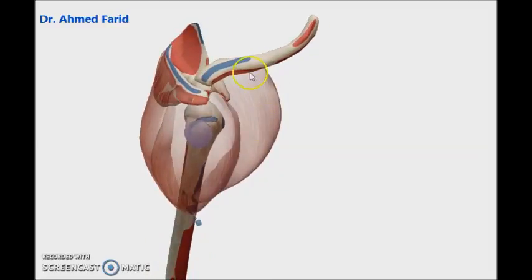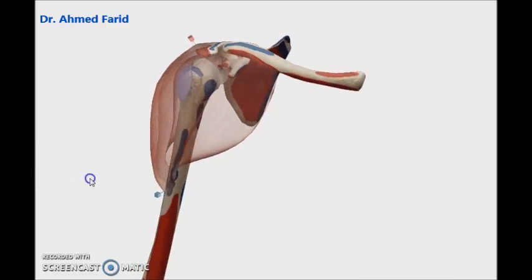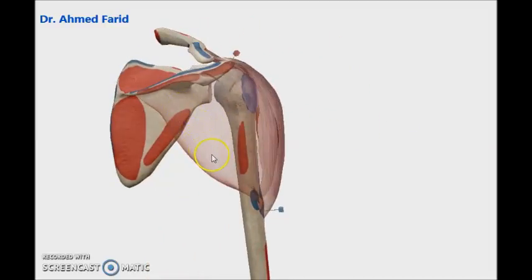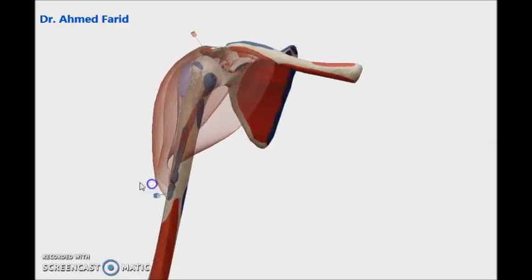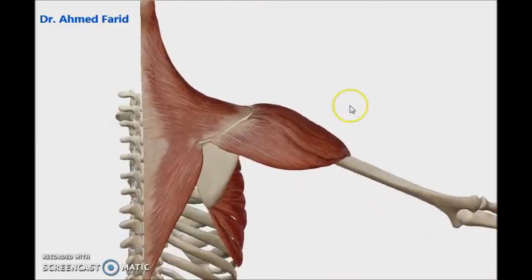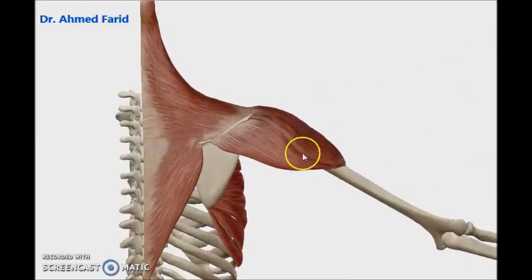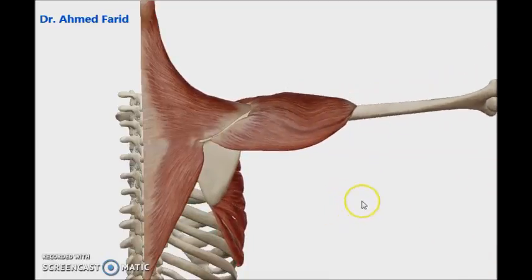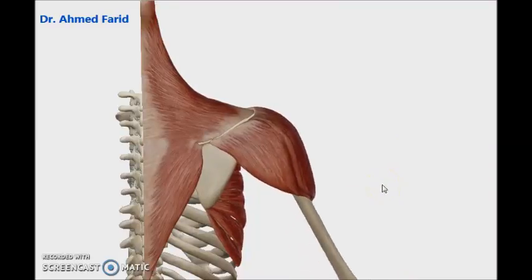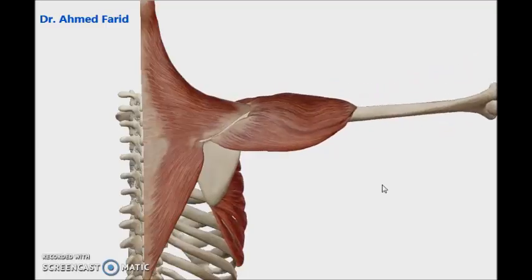Because it has three fibers — anterior, middle, and posterior — it has three actions. The anterior fibers will produce flexion of the shoulder joint. The posterior fibers will produce extension of the shoulder joint, while the whole muscle or the middle fibers will produce abduction of the shoulder joint. So the main action of deltoid will be abduction of the humerus at the shoulder joint. Abduction of the humerus by deltoid is done from 15 degrees to 90 degrees, and in a few minutes I will show the muscle that initiates the abduction of the shoulder.